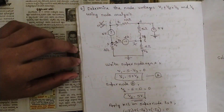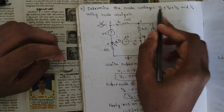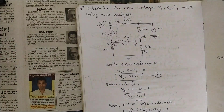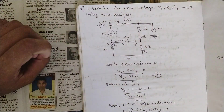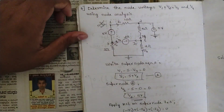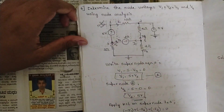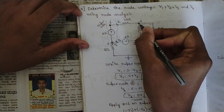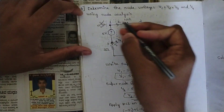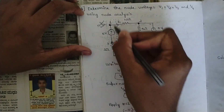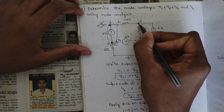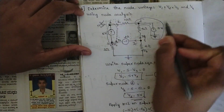The next problem: determine the node voltages V1, V2, V3, and V4 using node analysis. First analyze the circuit — we have four nodes. Observing carefully, we have two super nodes: one from node 1 to node 3 (no resistance between them), and one from node 2 to ground.